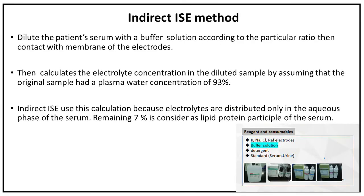With the indirect ion-selective electrode method, the patient's serum is diluted with a buffer solution at a particular ratio before contact with the electrode membrane. The electrolyte concentration in the diluted sample is calculated by assuming the original sample had a plasma water concentration of 93%. This is because electrolytes are distributed only in the aqueous phase of the serum; the remaining 7% is considered lipid and protein particles.